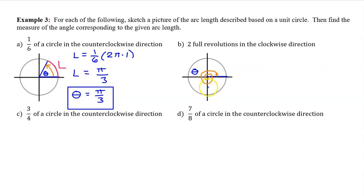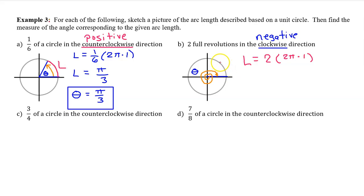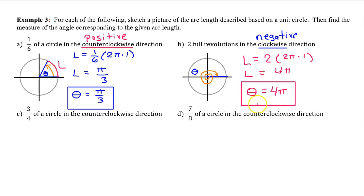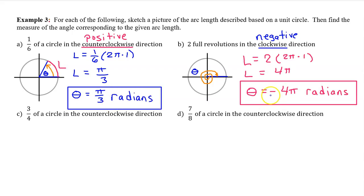Part B: two full revolutions in the clockwise direction. Because it is clockwise, the angle measure is negative. The arc length L will be double the circumference, so 2 times 2πr with radius of 1, giving arc length equal to 4π. On the unit circle, the angle measure in radians equals the arc length, so theta equals 4π. But because of the clockwise rotation, the answer is negative 4π radians.